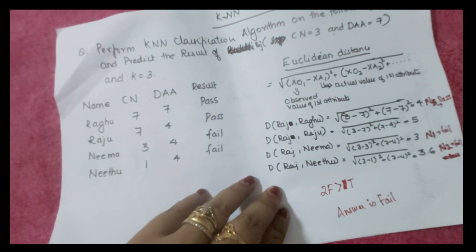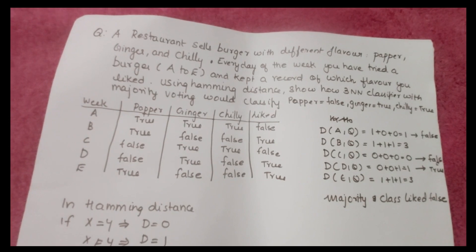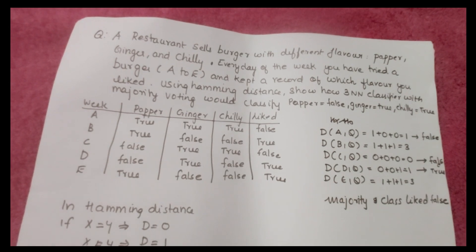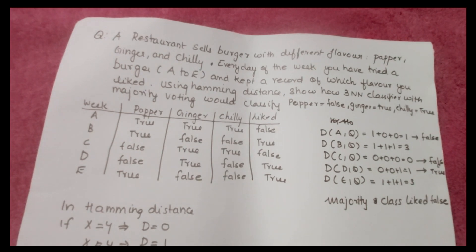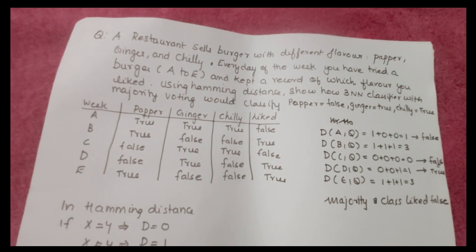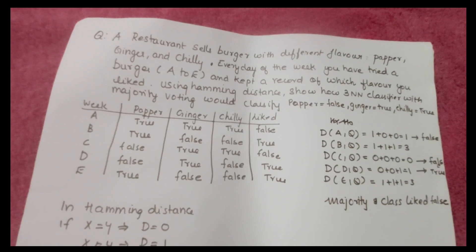Raj's result is Failed. Now let us do another problem — KNN classification using Hamming distance. A restaurant sells burgers with different flavors: pepper, ginger, and chili. Every day of the week you tried burgers from A to E and kept a record of which flavor you liked. Using Hamming distance, show how a 3-NN classifier with majority voting would classify: Pepper = False, Ginger = True, Chili = True.